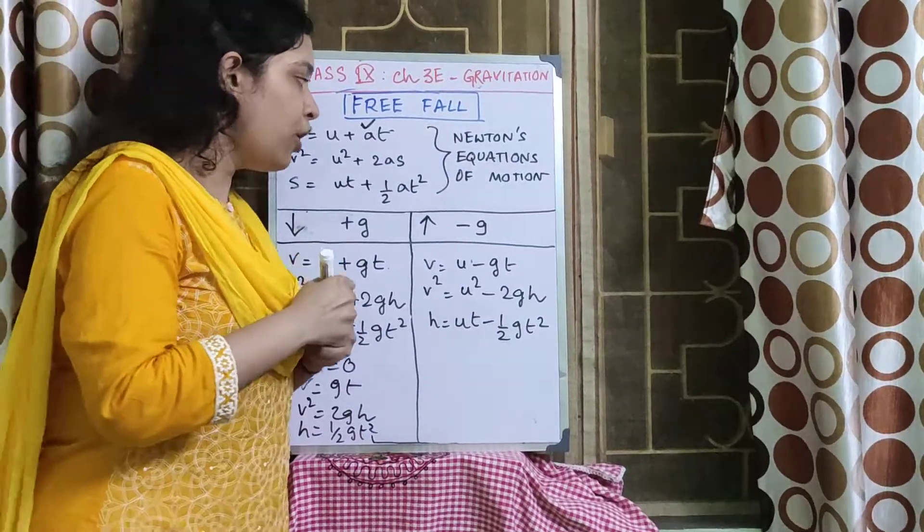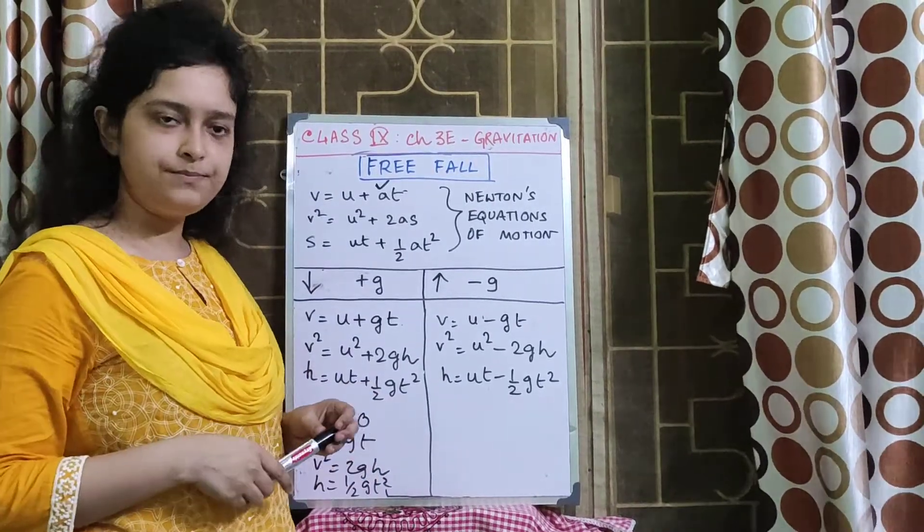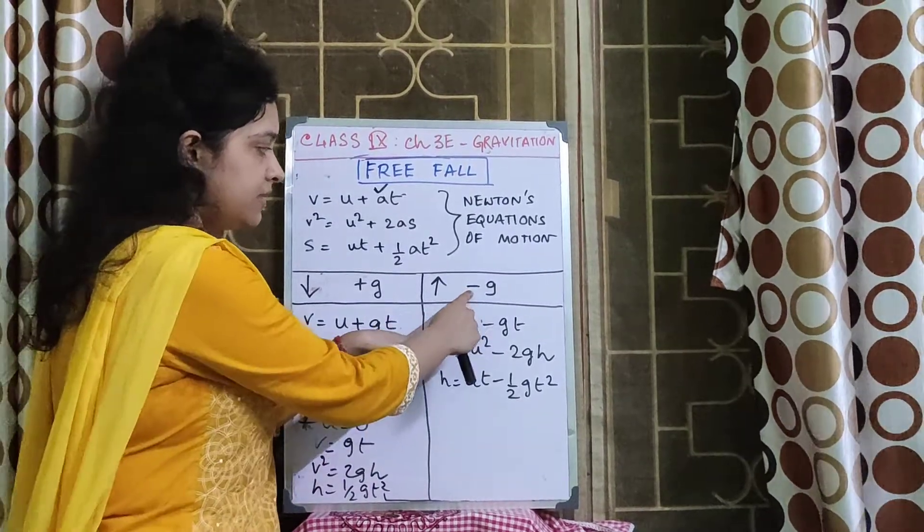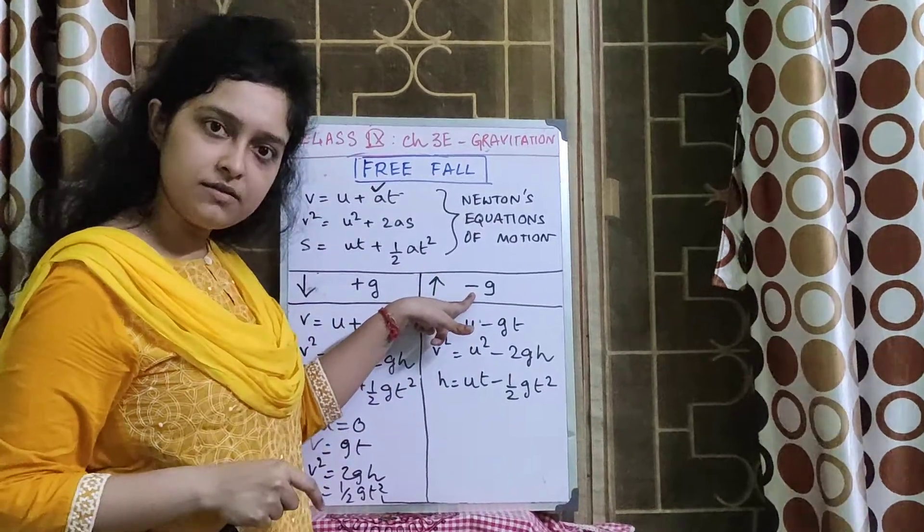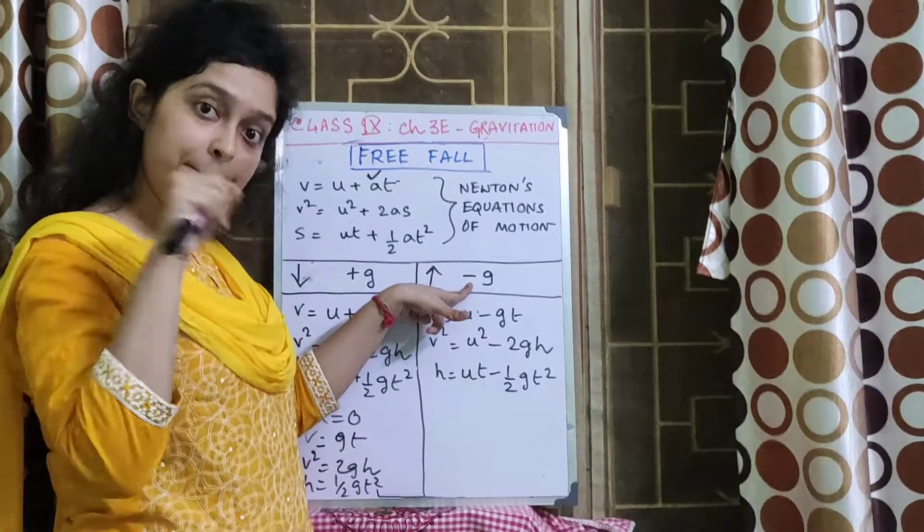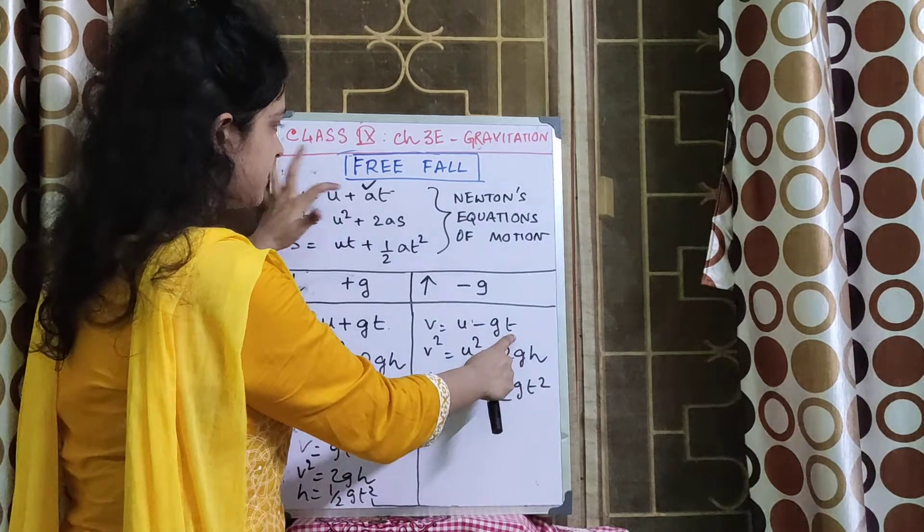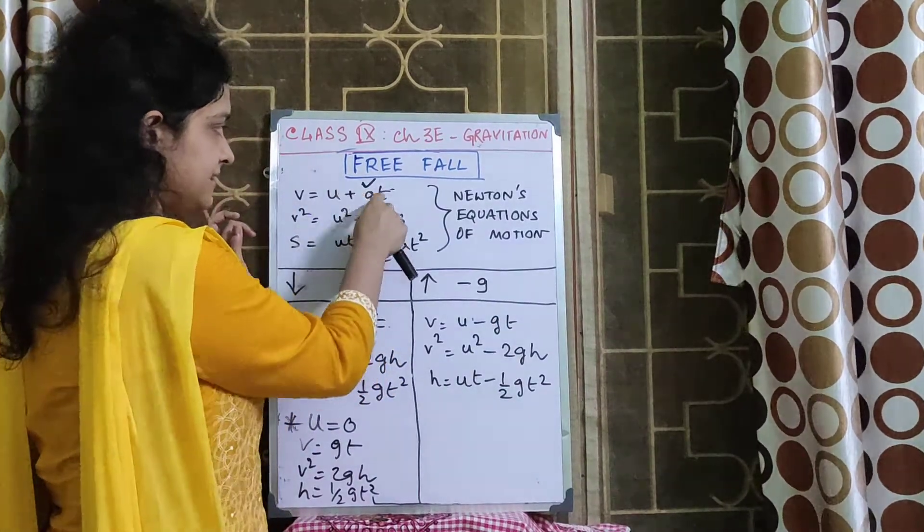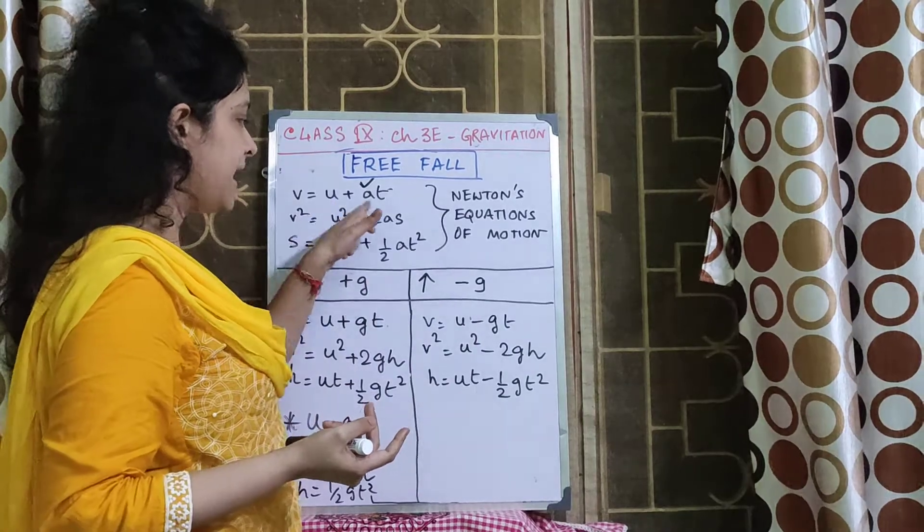Now when a body is thrown vertically upward, in place of A we will substitute minus G. Now the acceleration is minus G. V is equal to U minus GT. In case of A, if I substitute minus G, obviously it will become U minus GT.